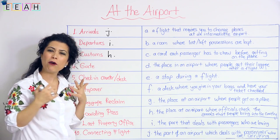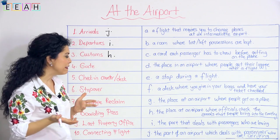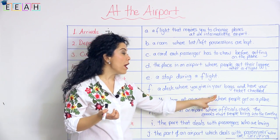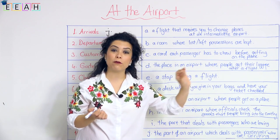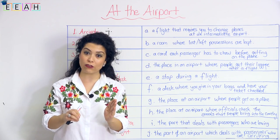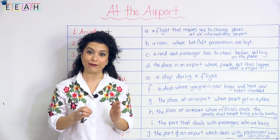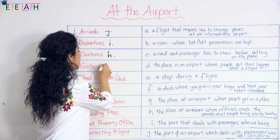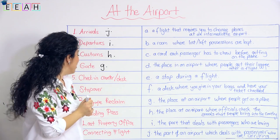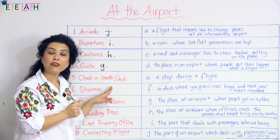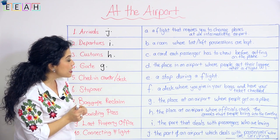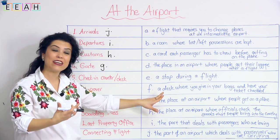Next: 'gate.' What does that mean? It's the place at an airport where people get on a plane. So you find the gate and you know where to board your plane. Gate matches with G.